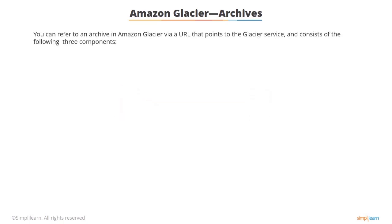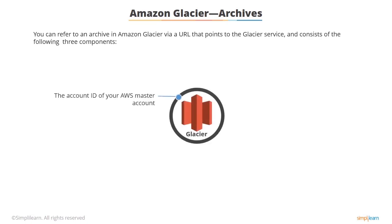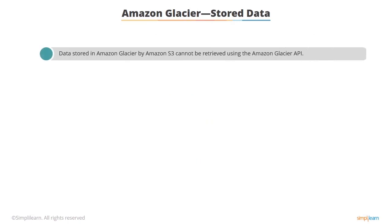You can refer to an archive in Amazon Glacier via a URL that points to the Glacier service and consists of the following components: the account ID of your AWS master account, and the name of the vault. Data stored in Amazon Glacier by Amazon S3 cannot be retrieved using the Amazon Glacier API. This is data that Amazon S3 manages on your behalf, and it does not show up as a vault or archive.